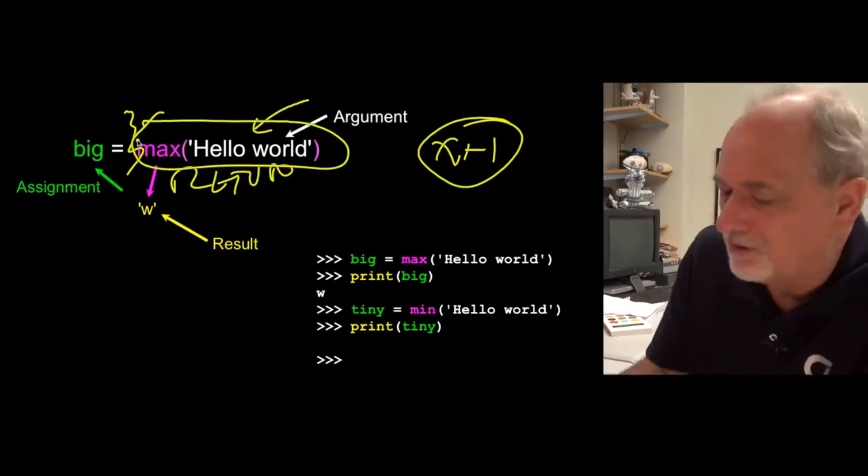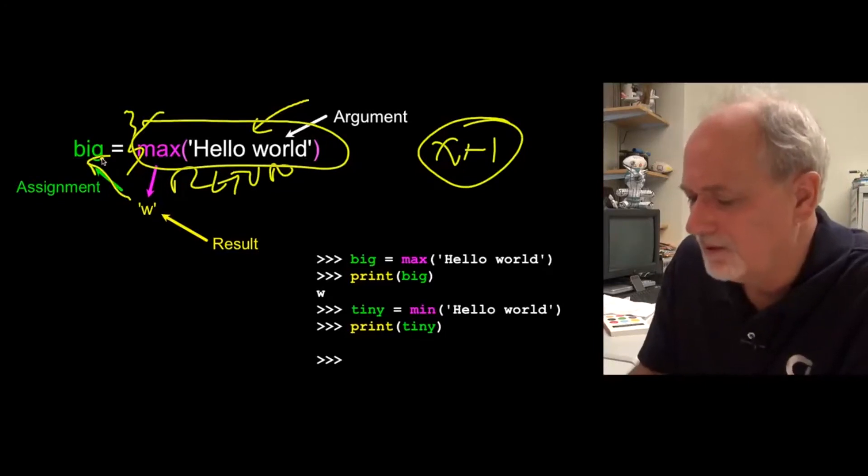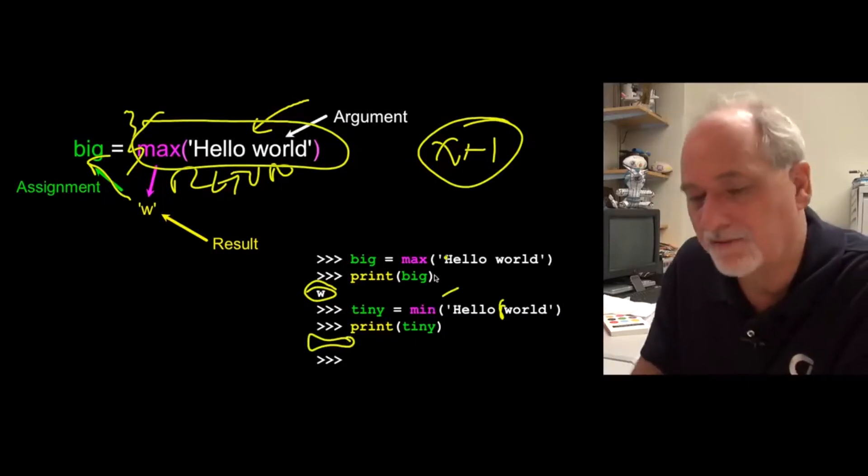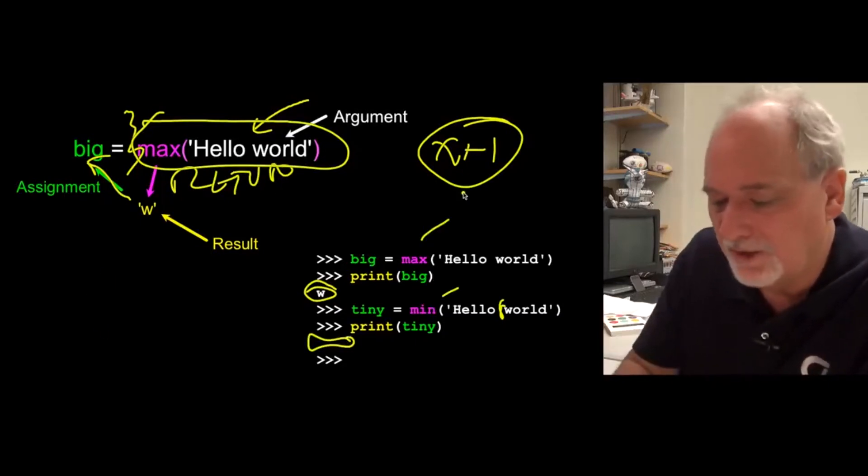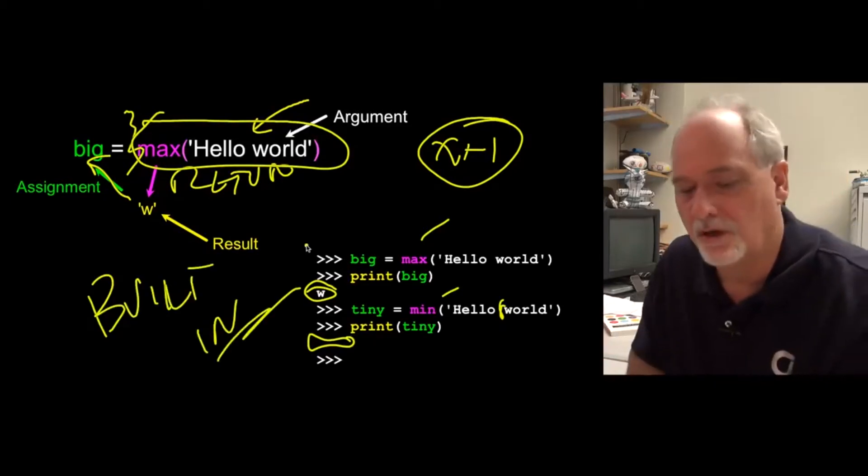Becomes the result of this little bit in the expression. And there's nothing else. We could have w plus one or something. And then the w is what's stored into big. So we print big. And big is a variable that has the letter w inside of it. And then we ask what is the smallest. And that finds the blank. And so we get a blank to see this. There's a min function and a max function. Both of these are built in. These are built in functions. They're always there for us.